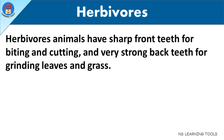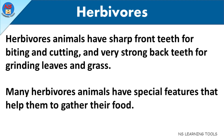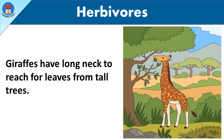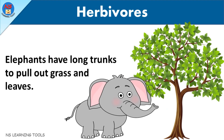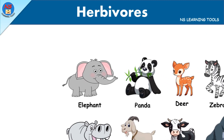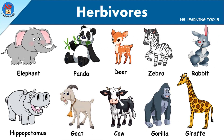Herbivore animals have sharp front teeth for biting and cutting, and very strong back teeth for grinding leaves and grass. Many herbivores have special features that help them gather their food. Giraffes have long necks to reach leaves from tall trees, and elephants have long trunks to pull out grass and leaves.